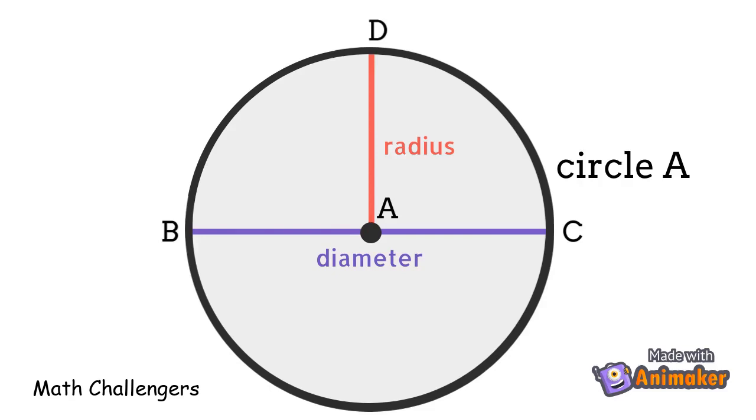For example, if the diameter is 10 cm, then the radius is 5 cm.